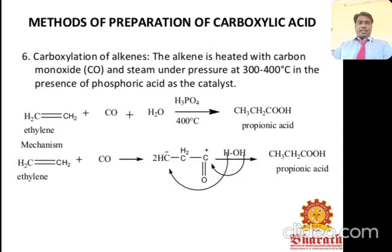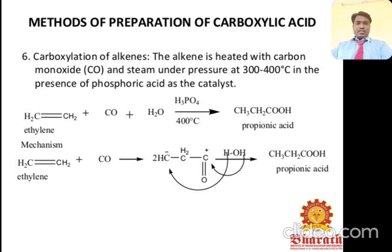Carboxylation of alkenes: alkenes are heated with carbon monoxide and steam under pressure of 300–400°C in the presence of sulfuric acid as a catalyst.